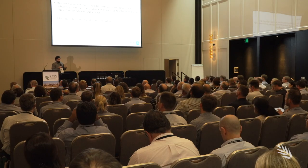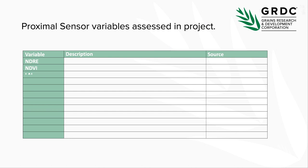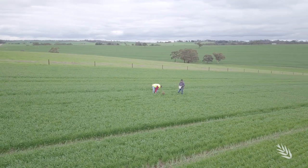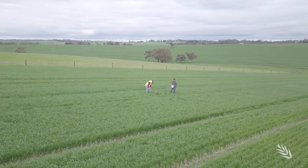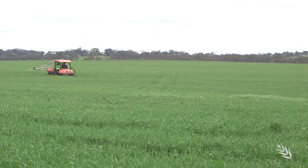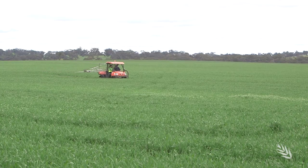The research team used commercial proximal crop sensors to collect data on 12 different variables. The team worked across 11 different trial sites in Western Australia and South Australia, all with different management, weather and soil conditions.